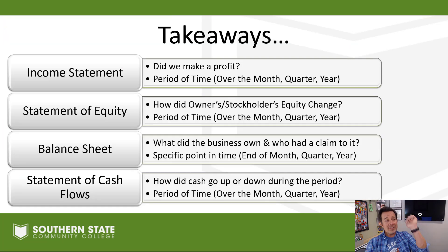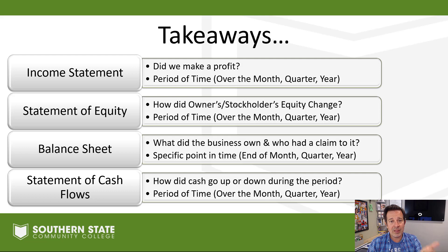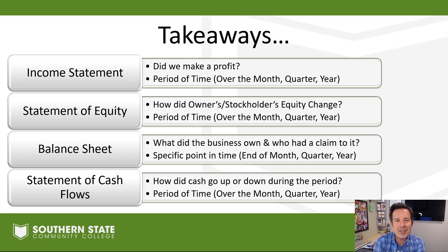Takeaways. We have an income statement — did we make a profit, and how much? That income statement covers a period of time, whether it be a month, a quarter, or a year. We also have a statement of equity that shows how the owner's or stockholder's claim changed over the period — again, a month, quarter, or year. We have a balance sheet — what did the business own and who had a claim to it? It shows the accounting equation (assets equals liabilities plus equity) at a specific point in time: the end of the month, quarter, or year. It's based on one point in time, not a period. Then we have the statement of cash flows — how did the cash balance go up or down during the period? That's a period-of-time report; it covers a month, a quarter, or a year.